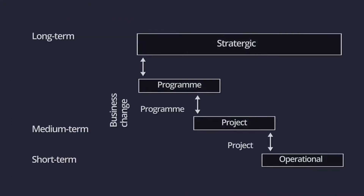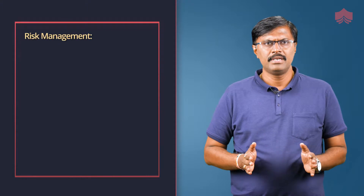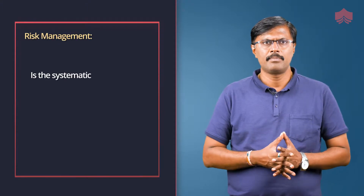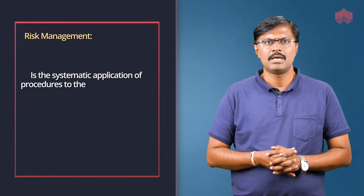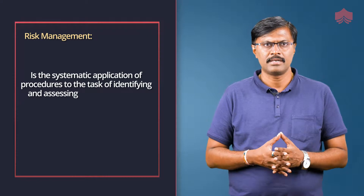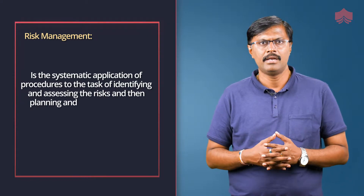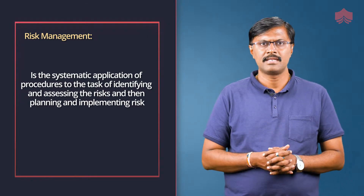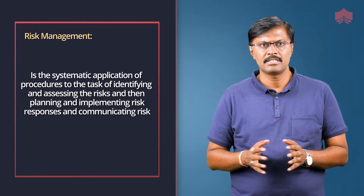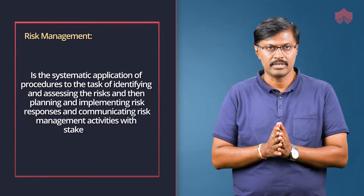As risks are uncertain events, they may occur at strategic level, program level, project level, or operational level as depicted in the diagram. Risk management is the systematic application of procedures to the task of identifying and assessing the risks and then planning and implementing risk responses and communicating risk management activities with stakeholders.